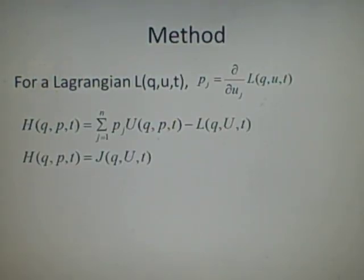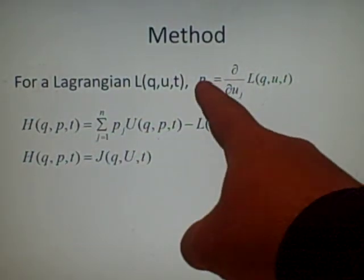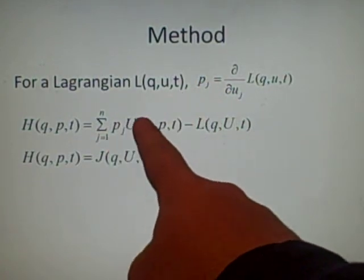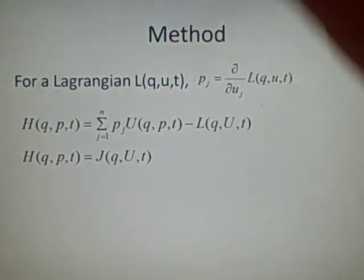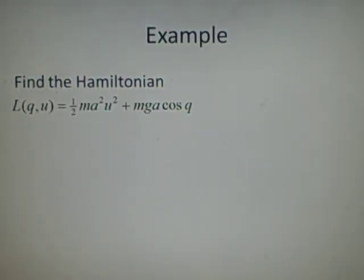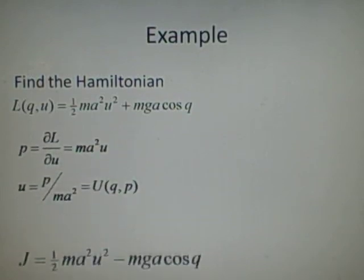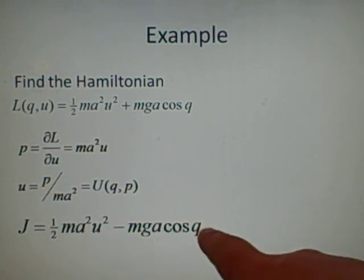The next thing we want to do is find this here. So what we do is we take our conjugate momenta and multiply that by our u minus our Lagrangian with the big U substituted in for the little u. I hope that made sense.